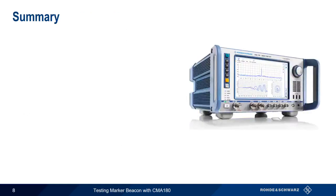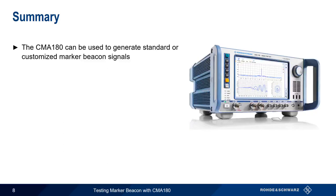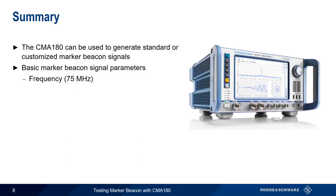In summary, the CMA-180 can be used to generate standard or customized marker beacon signals. When configuring marker beacons, the basic parameters are frequency, which is normally 75 MHz for all types of markers, the level, and the marker type: outer, middle, or inner. These are differentiated by the corresponding audio frequency. This concludes our short presentation, Testing Marker Beacon with a CMA-180. Thanks for watching.